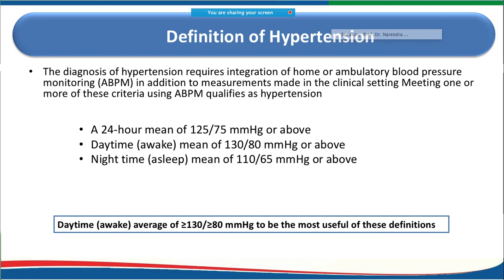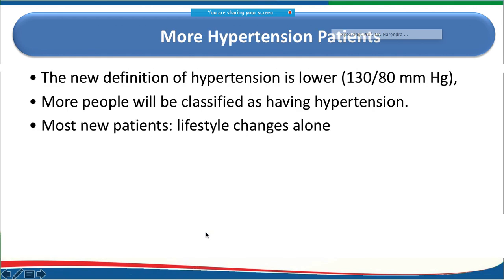For ambulatory blood pressure monitoring, hypertension is defined as a 24-hour mean above 125/75 mmHg, or above 130/80 mmHg when awake, or above 110/65 mmHg when asleep. Since most recordings are taken during daytime when the person is awake, the most useful definition is more than 130/80 mmHg.